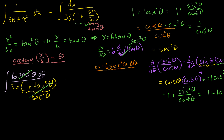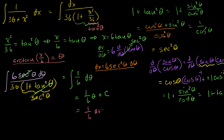Our integral reduces to the integral of 6 over 36, which is just 1/6 dθ, which equals 1/6 theta plus C. Now we back substitute: theta equals arctangent of x over 6. So the antiderivative of 1 over 36 plus x squared equals 1/6 times arctangent of x over 6 plus C.